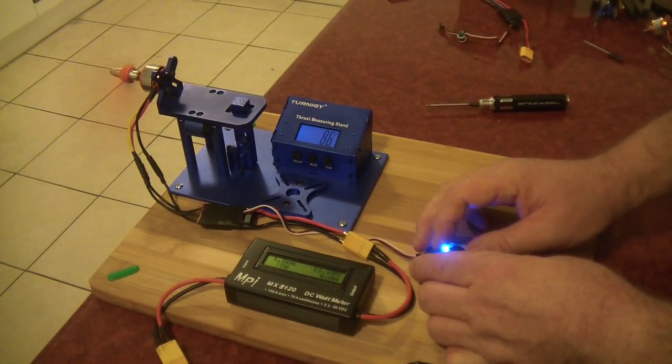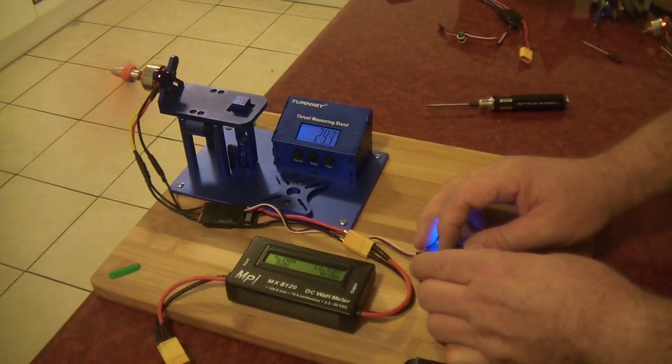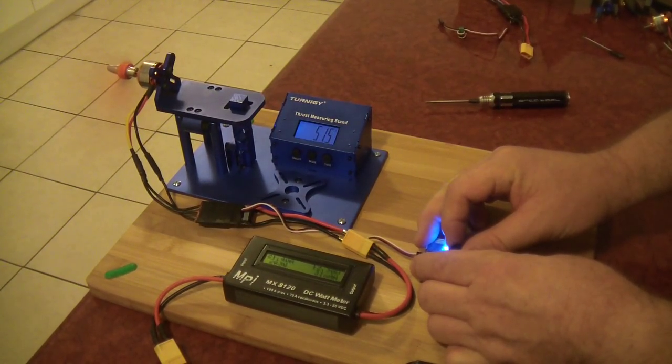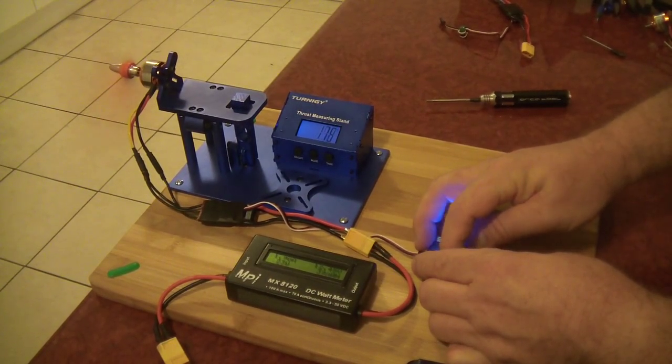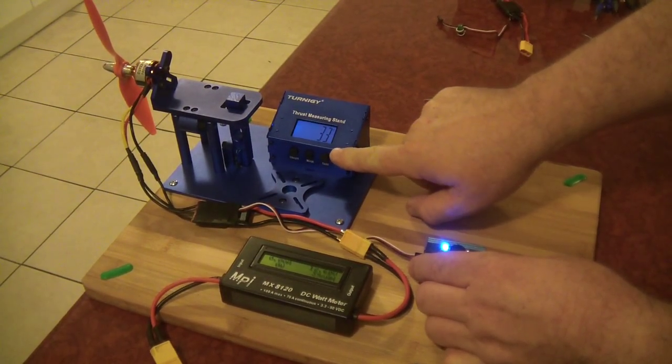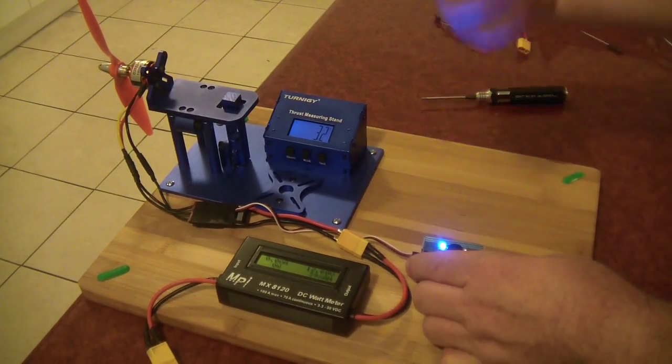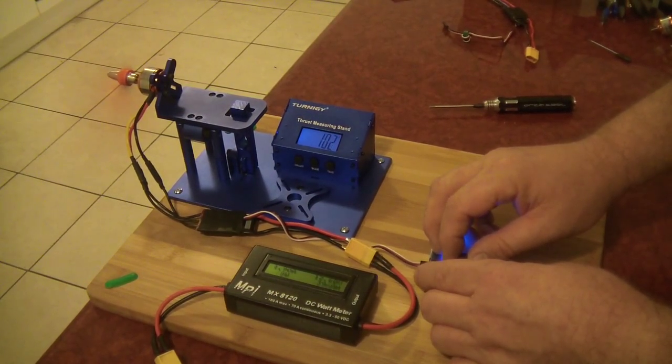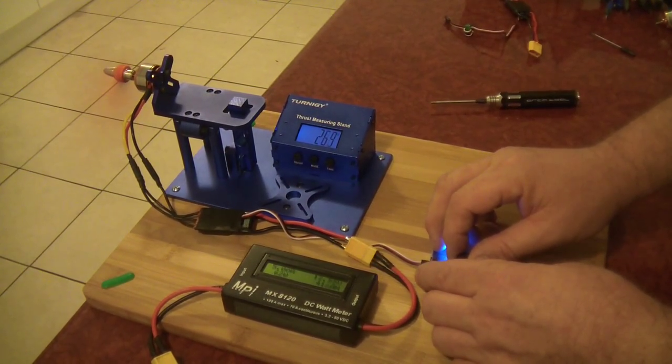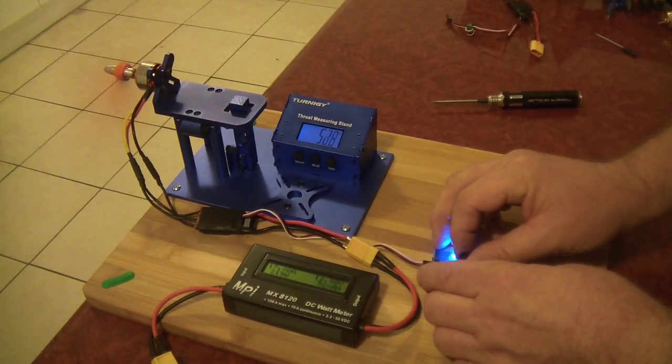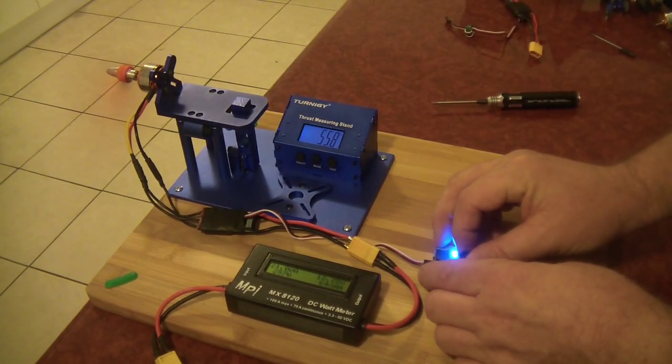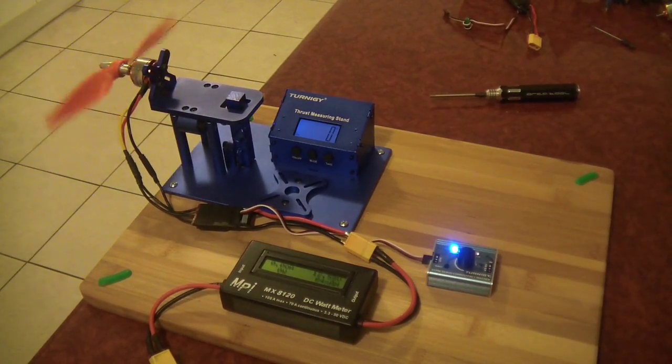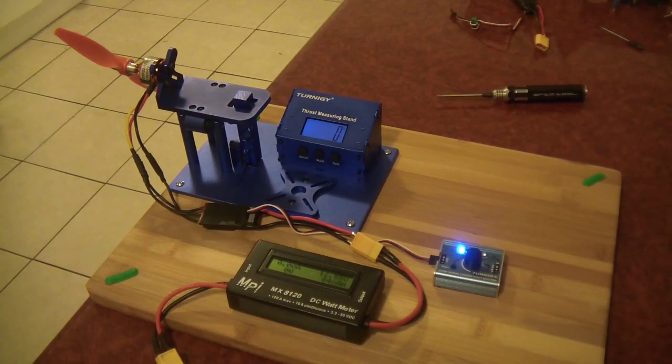I'll just run it up. Just watch that again, you'll see the thrust increases and then it decreases when the motor goes out of sync. Just reset that. It got up to about 560 then when it went out of sync it went down to 460.